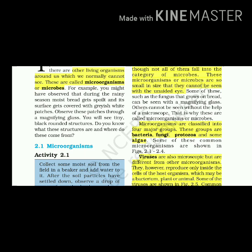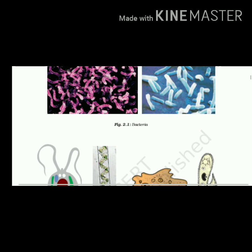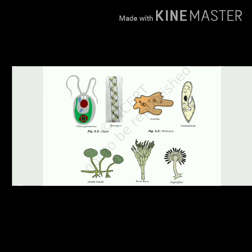Microorganisms are classified into four major groups: bacteria, fungi, protozoa, and some algae. Some of these common microorganisms are shown in figures 2.1 to 2.4. These are the four major microorganisms: bacteria, algae, protozoa, and fungi.